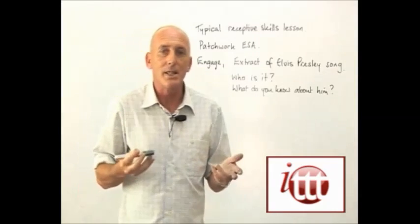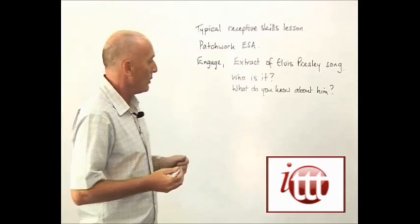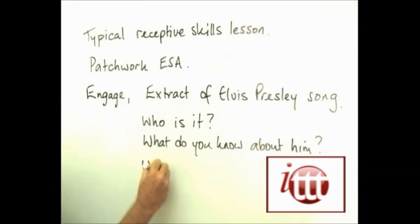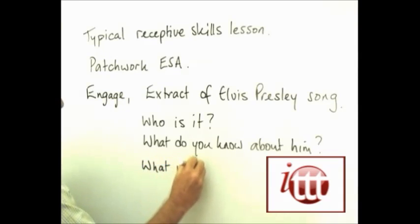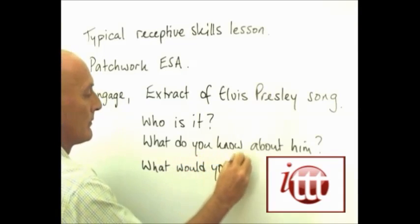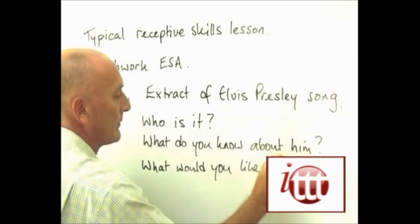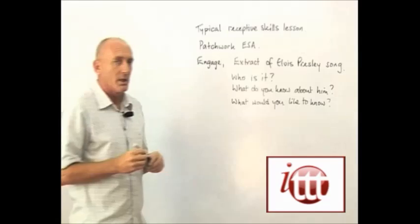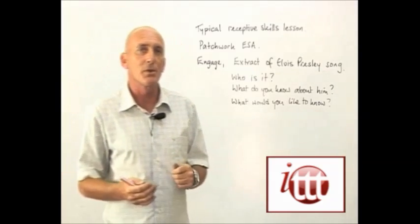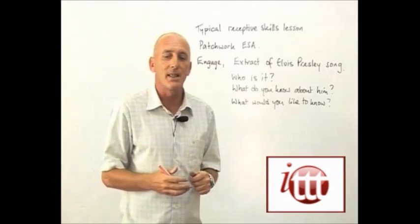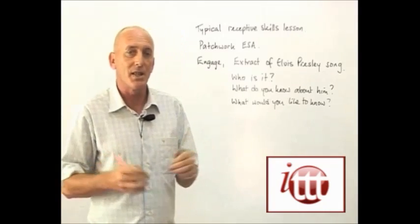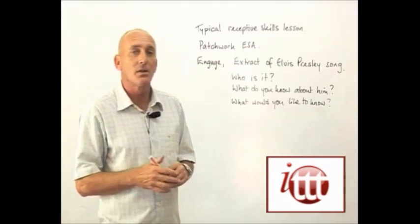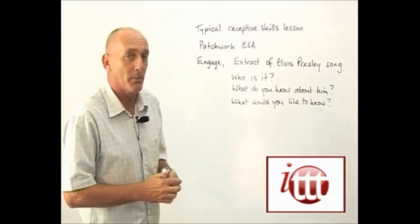To help generate the interest in this, we can also ask them what they'd like to know about him. What we can then do is just to introduce them to the text that they're going to read for detail later on, but just at this stage we'll do a quick skimming or scanning exercise to find some information from that particular text. It's important that that skimming or scanning exercise is at the most a couple of minutes so that we don't give them an opportunity to read every single word within the text.